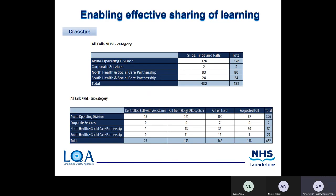The first is the crosstab report. This is a very quick and easy way to display your data by numbers on a table. The top example shown is the number of falls recorded by area — a high-level report showing your four main areas within NHS Lanarkshire. The bottom crosstab shows falls per area but includes subcategories such as controlled fall or fall from height, providing more detail on each fall itself.